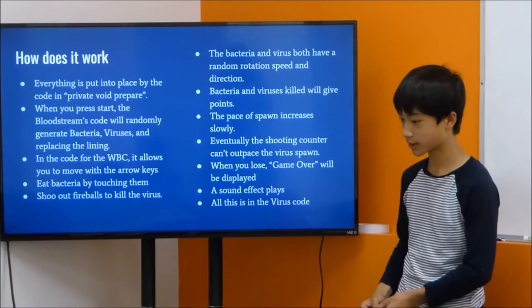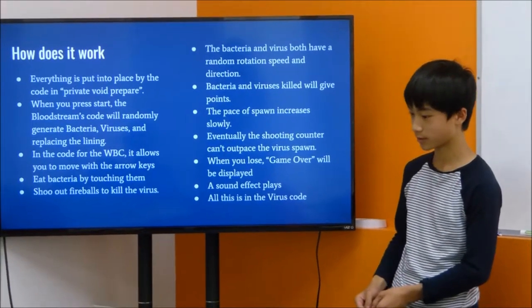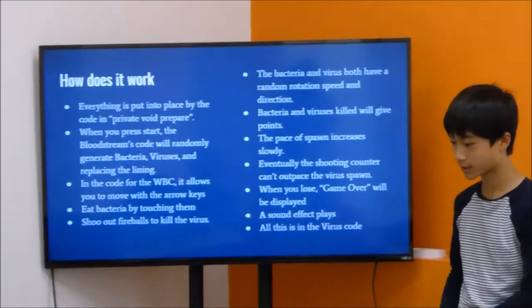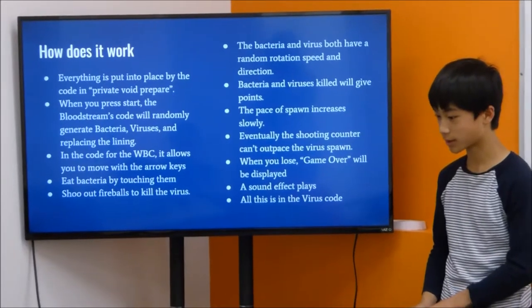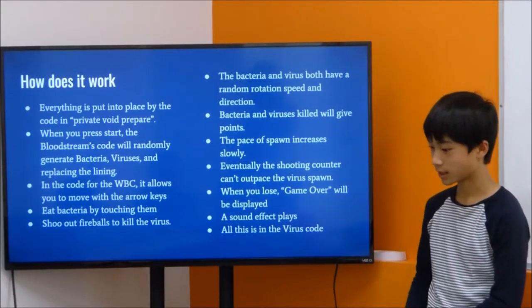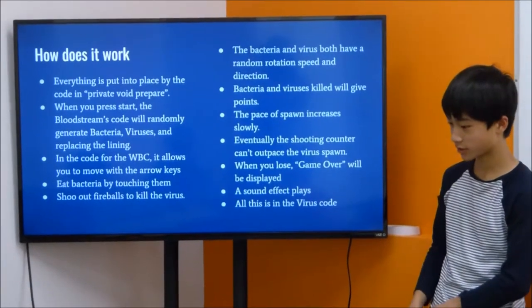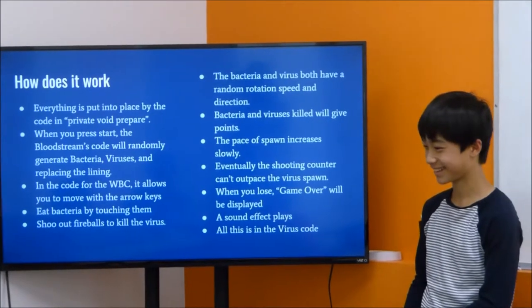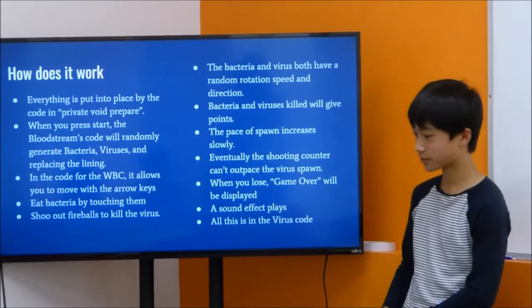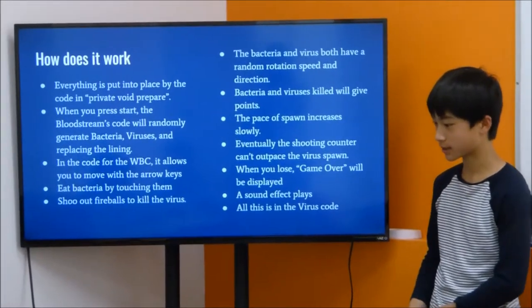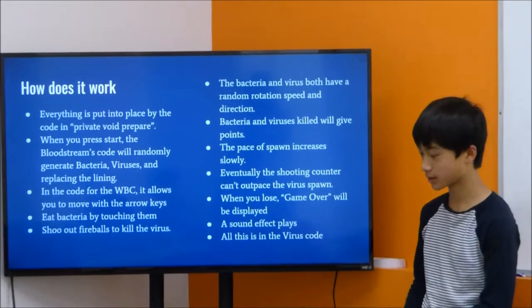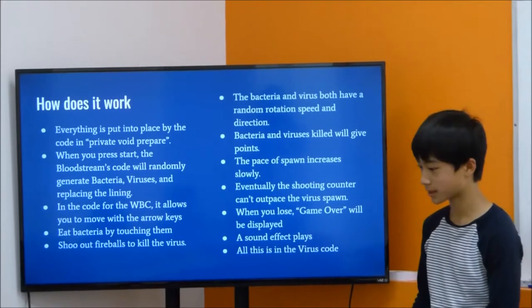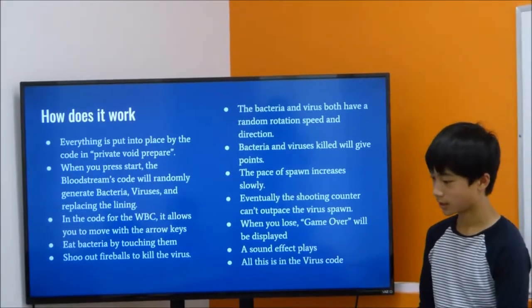How does it work? Everything is put into place by the code in prepare or prepared. When you press start, the bloodstream's code will randomly generate bacteria, viruses, and place the lining. In the code for white blood cell, it allows you to move with the arrow keys. You can eat bacteria by touching them, and you shoot out a fireball to kill the viruses. The bacteria and virus both have a random rotation speed and direction, and killing bacteria and viruses will give a certain number of points. The pace of spawning increases slowly, and eventually the shooting counter can outpace the virus spawn, and you lose.